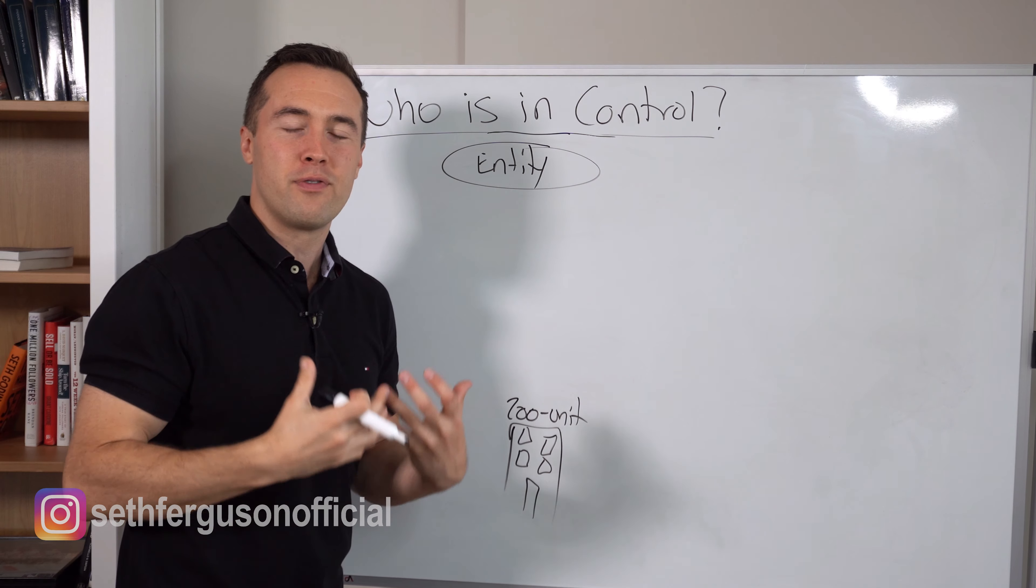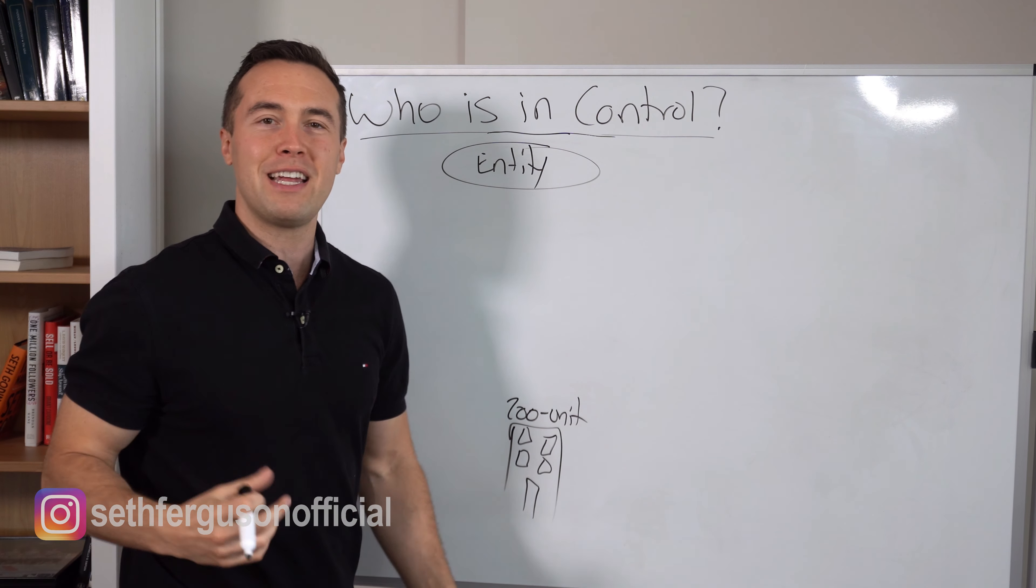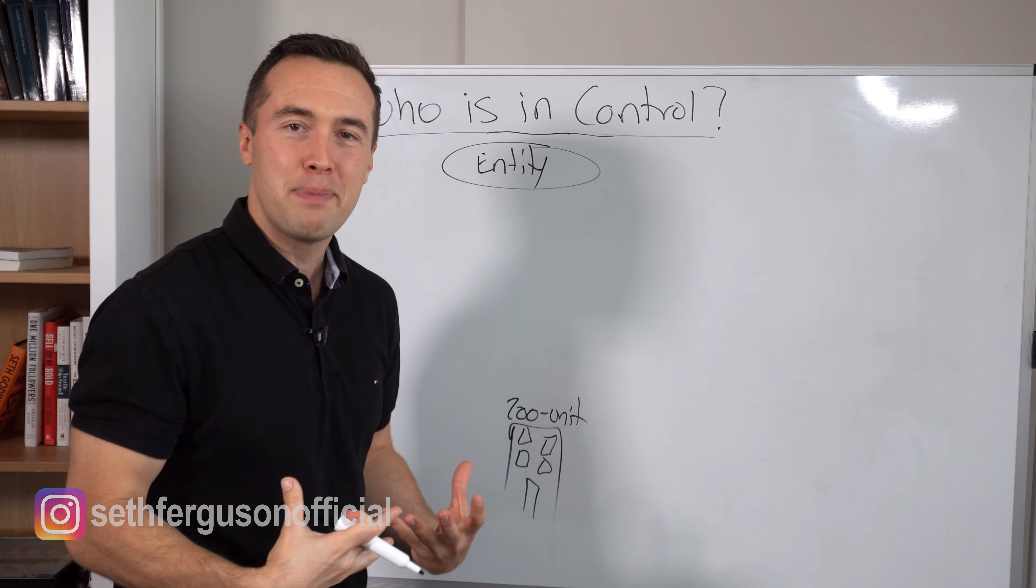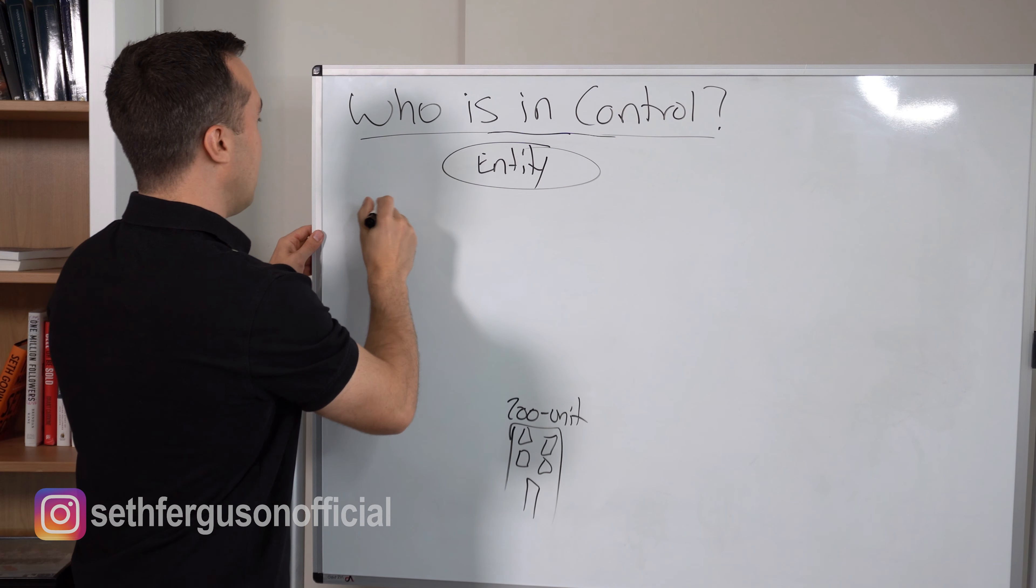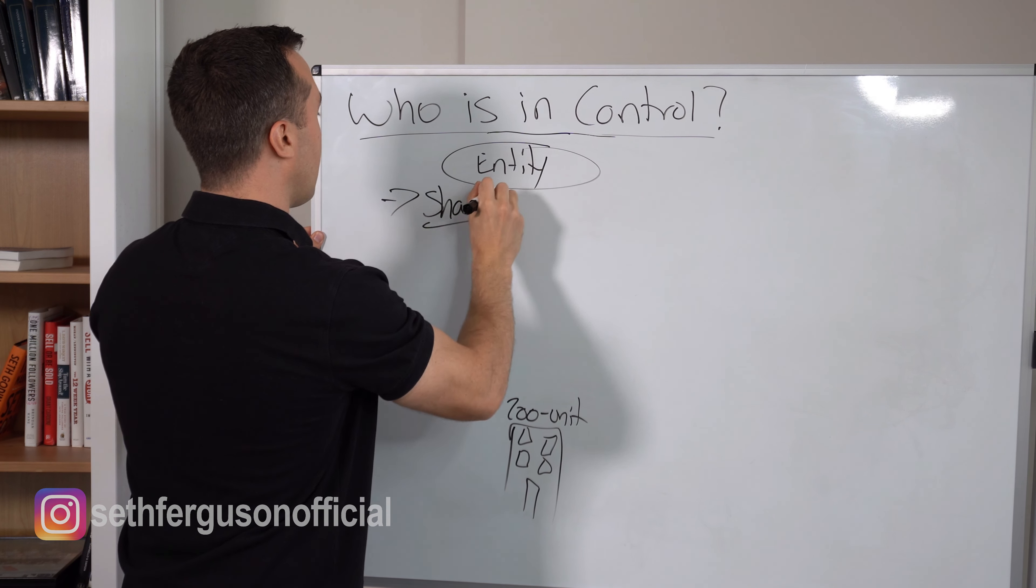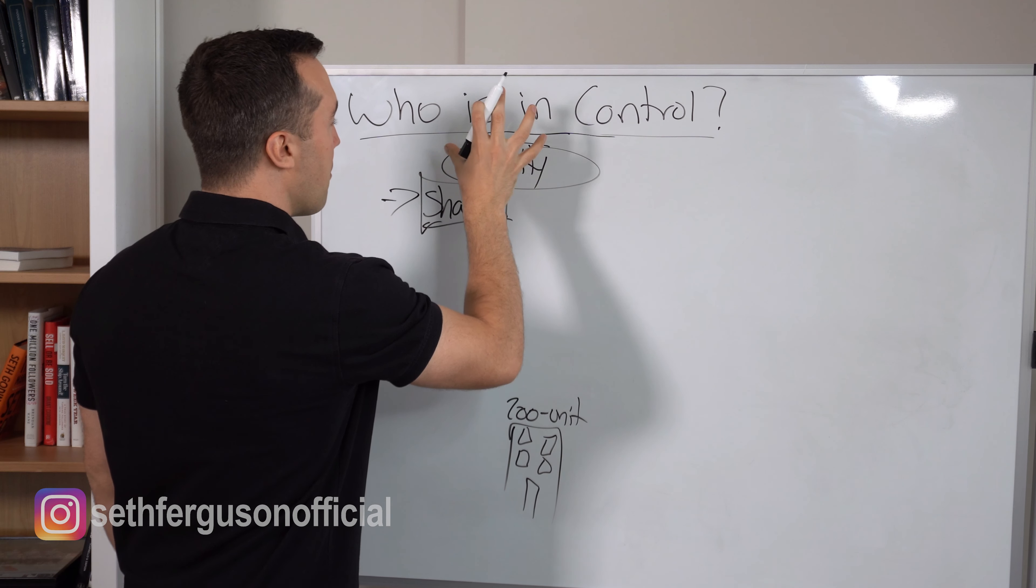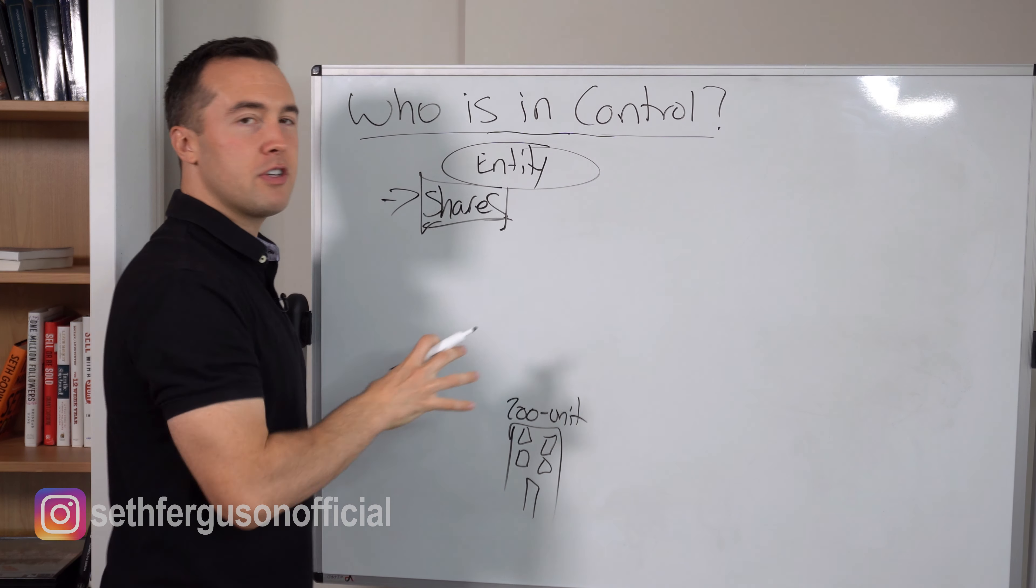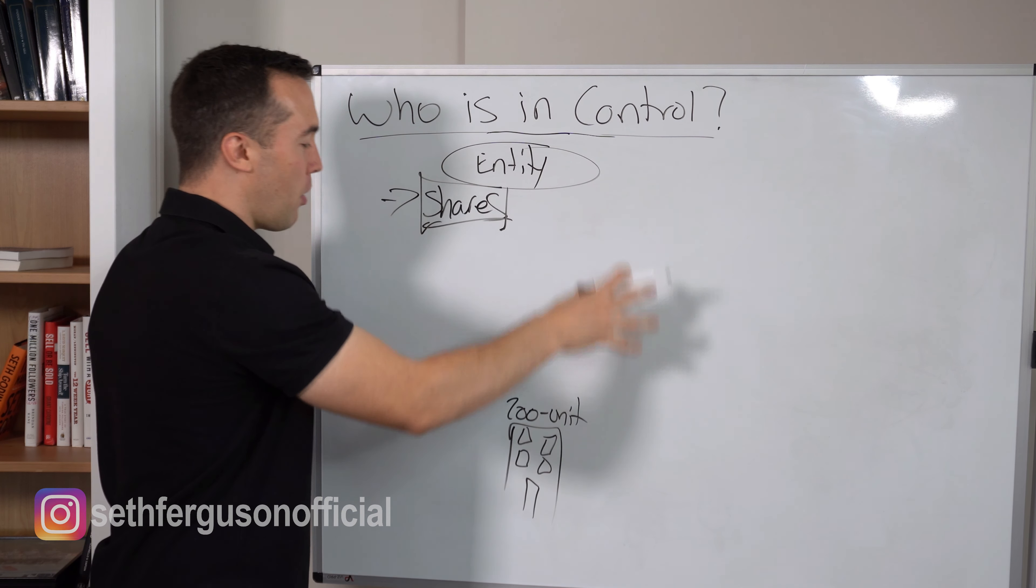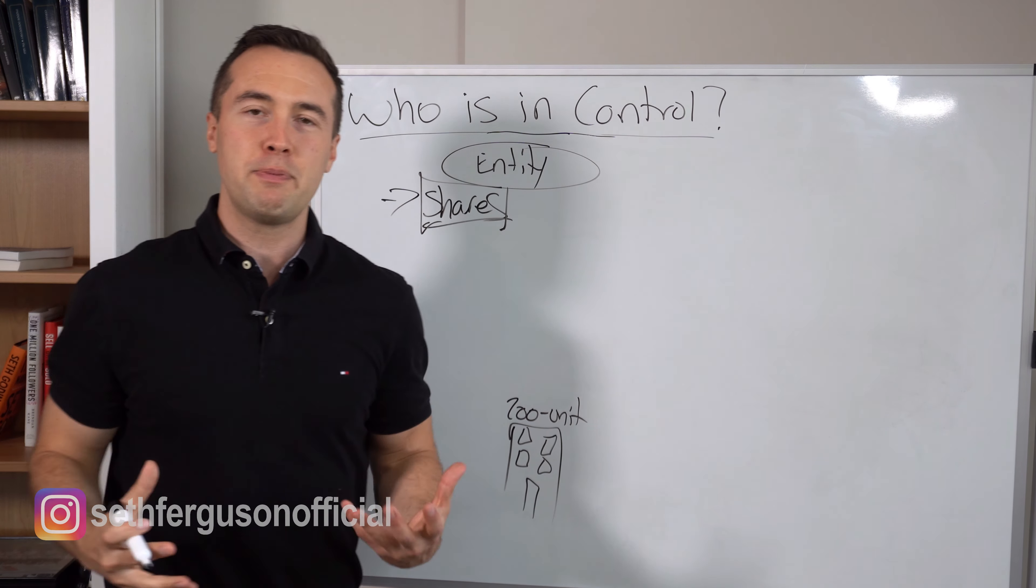On layer number two, we have our entity, but how do we actually own pieces of the entity? Because the entity itself owns a piece of real estate, but how do we as people participating own it? Well, it's made up of different shares, just like how you own shares of a business. We actually buy shares, we acquire shares of the holding entity, and this is how we get our ownership of the piece of real estate.